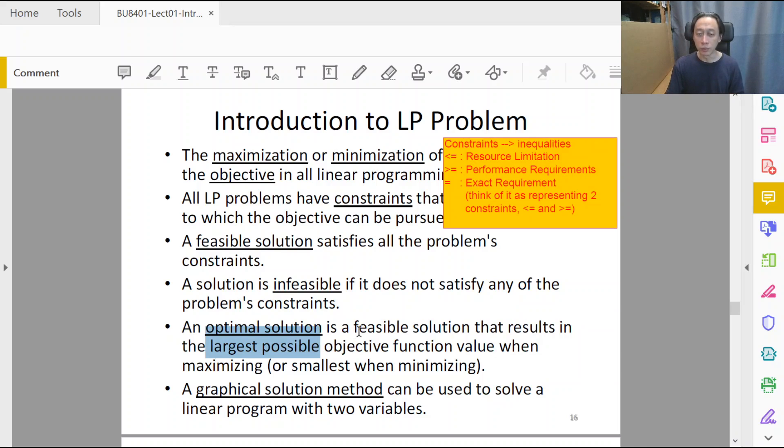When we finally found an optimal solution, first of all optimal solution is a feasible solution—it satisfies all inequalities. Remember when it does so, it means we can do it in real life. In addition, not only can we do it in real life, mathematically it gives us the best objective value.